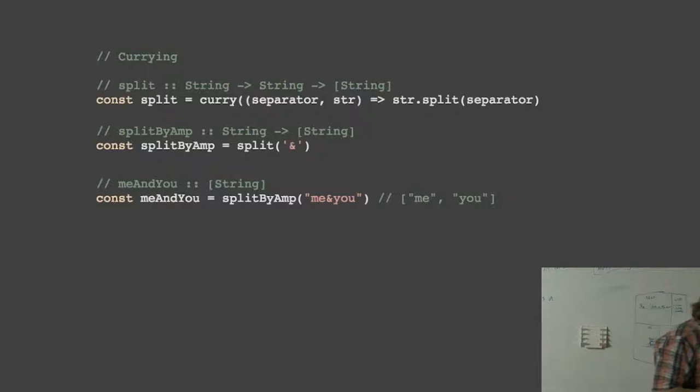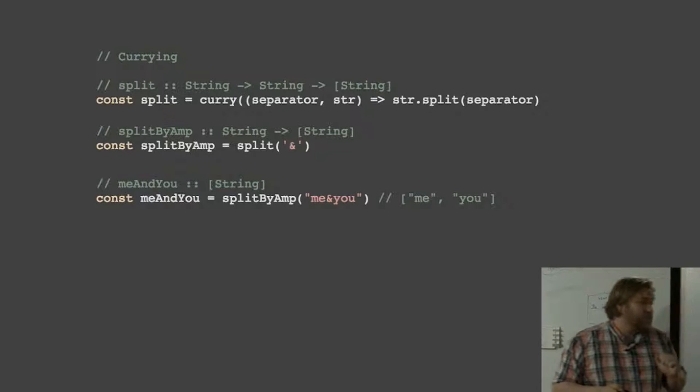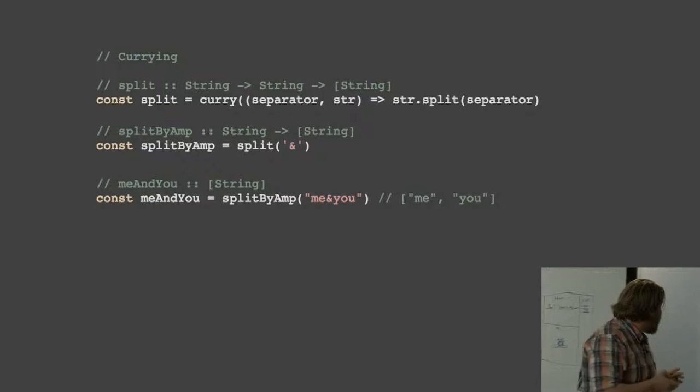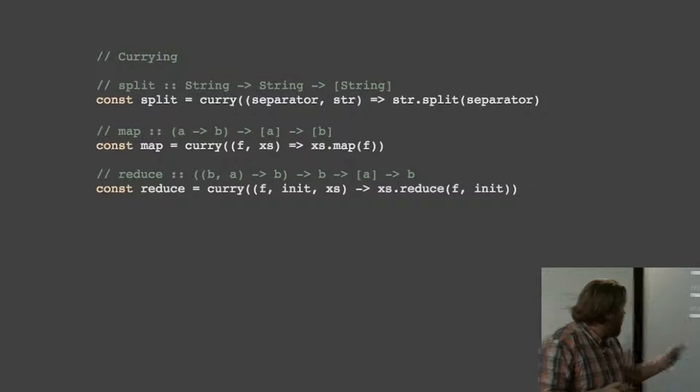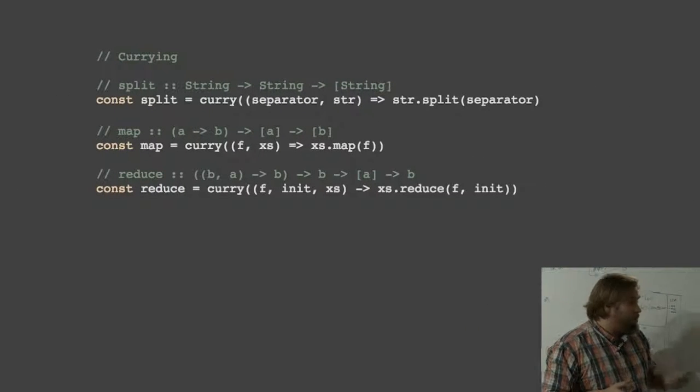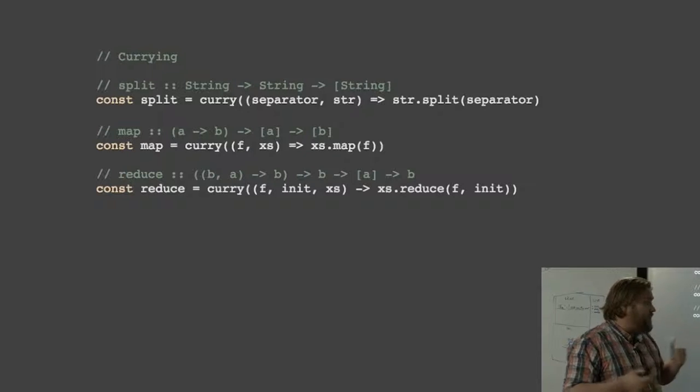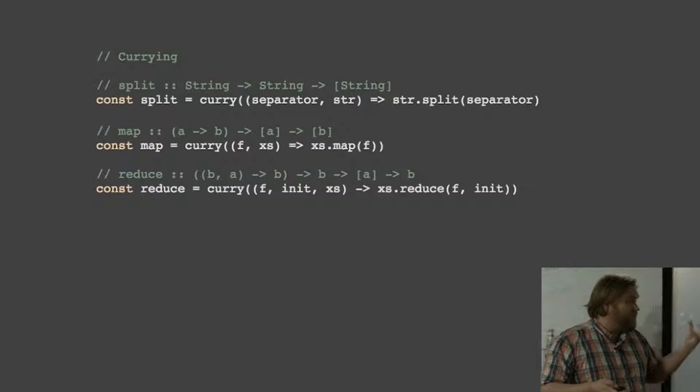This lets us use functions to create other functions by giving them some of the arguments they expect. This is very useful because one of the problems with compose is that functions can only return one argument, so if we're going to compose them, they can also only accept one. We can use curry to get around that.